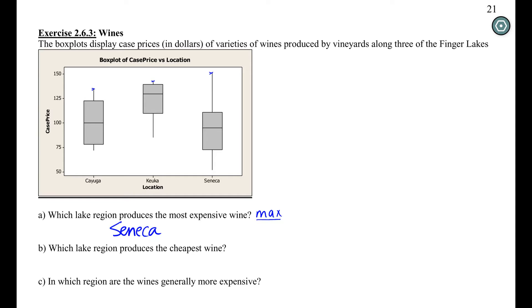The next question says, which lake region produces the cheapest wine? So now we're looking at the min and same deal. We're looking at the end of these whiskers. Seneca has our lowest minimum case price right around 50 bucks.